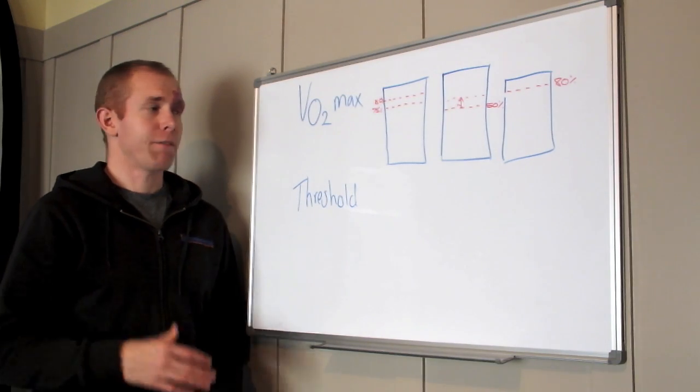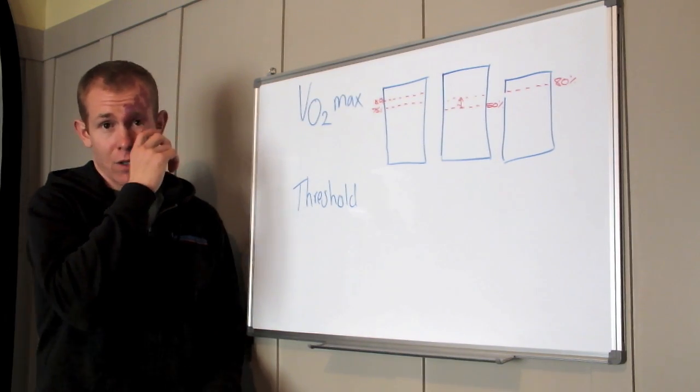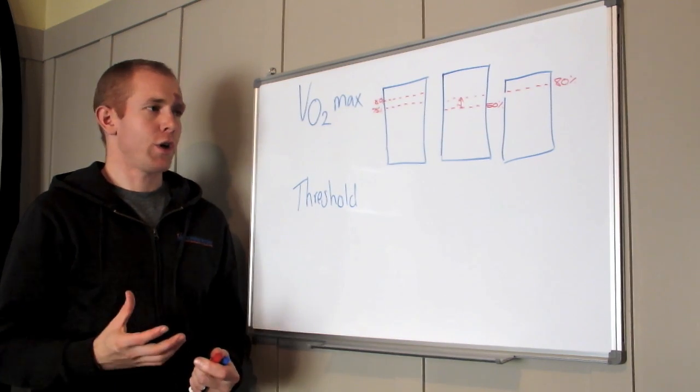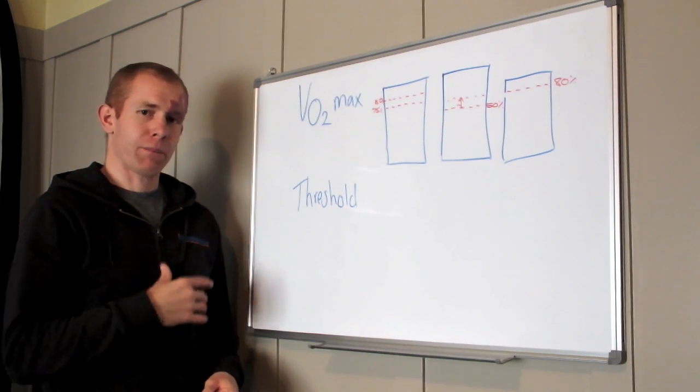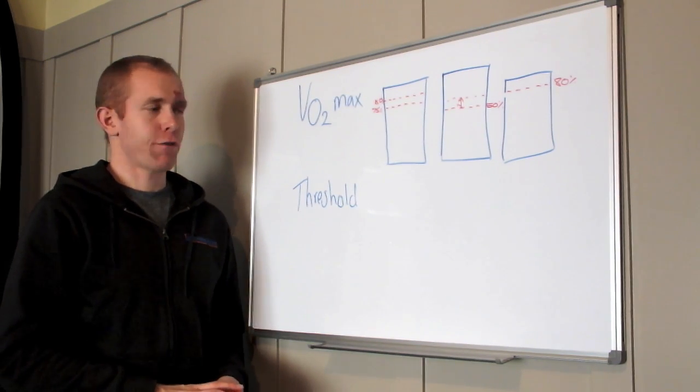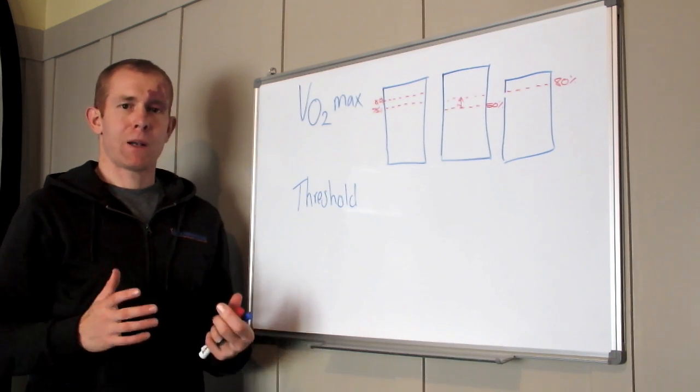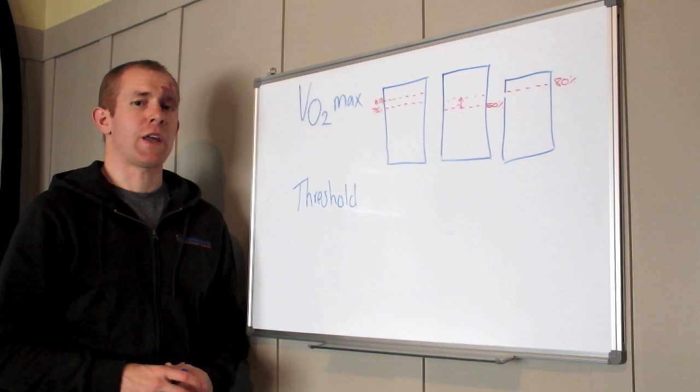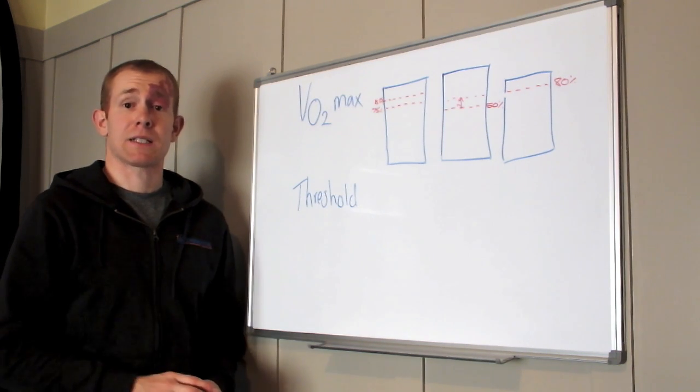So there you have it, VO2 max and anaerobic threshold. If you're even more confused now than you were let me know and I can try and explain it slightly differently. Please keep your questions coming so that I can keep giving you the good information so that you can train harder and smarter.